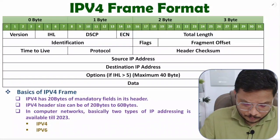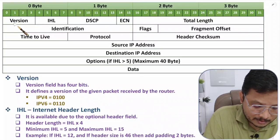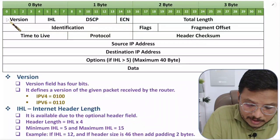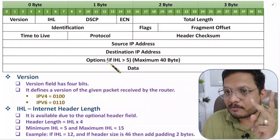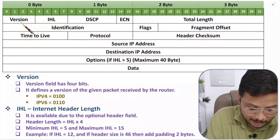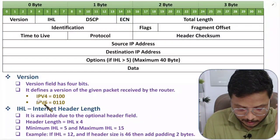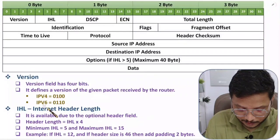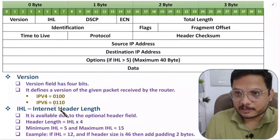The first field is Version. Version explains which version of Internet Protocol is being used. The first four bits define the version. If it is 0100 (meaning 4), the packet belongs to IPv4. If it is 0110, the frame belongs to IPv6.